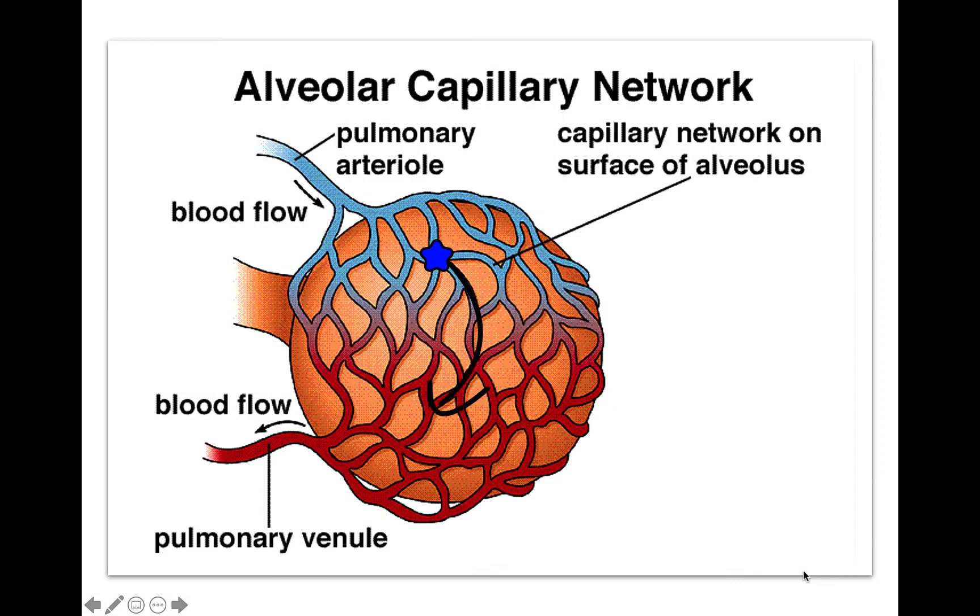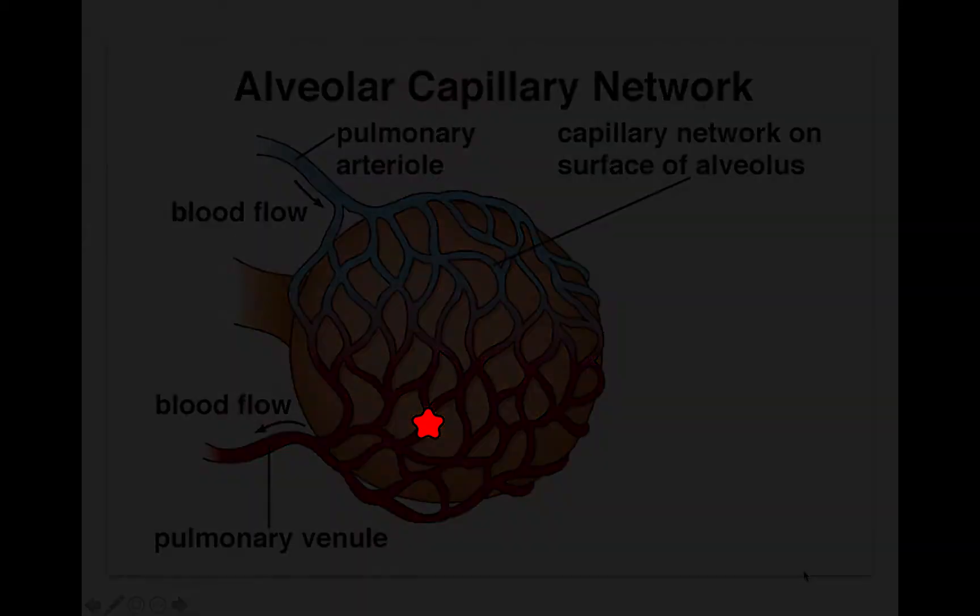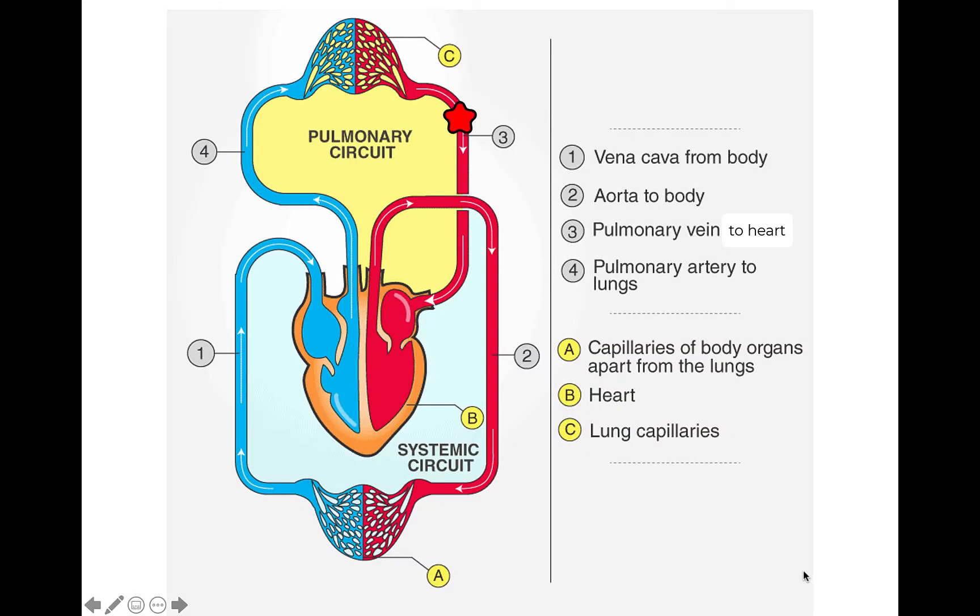Once in the lungs, oxygen and carbon dioxide gas will be exchanged. Oxygenated blood will travel back to the heart via the pulmonary vein. This is the only time a vein will carry oxygen-rich blood. Note the red color.